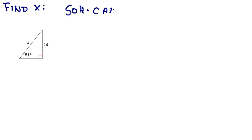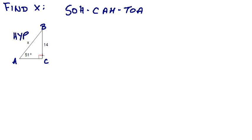SOH-CAH-TOA. Let's label this A, B, and C. So we know angle A, and we are missing our hypotenuse this time. The hypotenuse is always across from the right angle. We also have an opposite side from angle A, and this of course is our adjacent side, which we're not going to use.